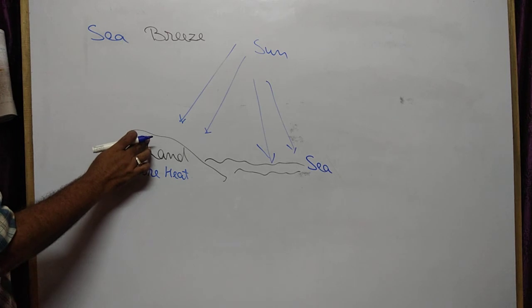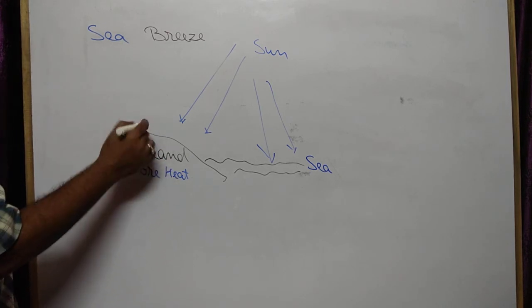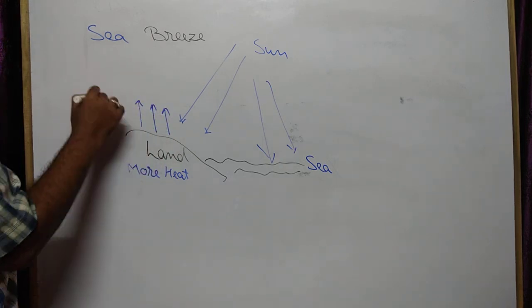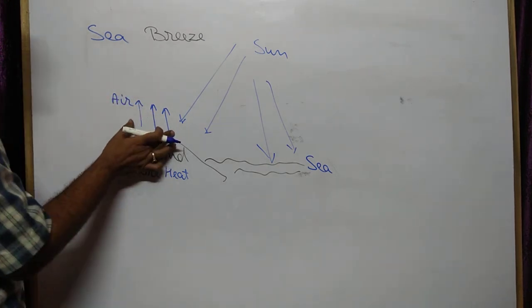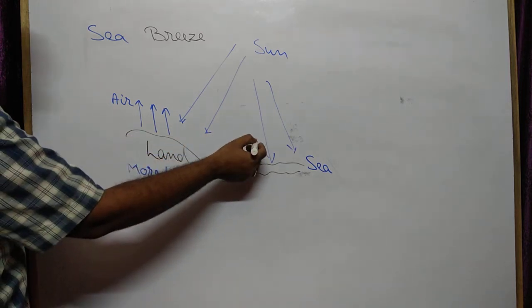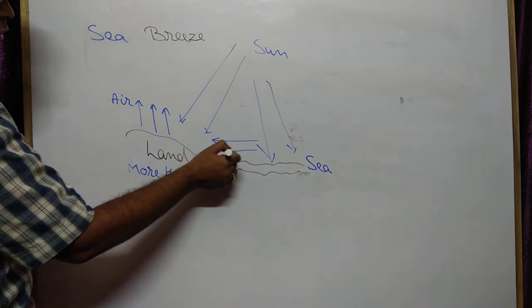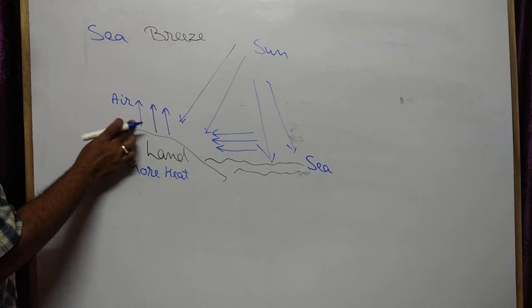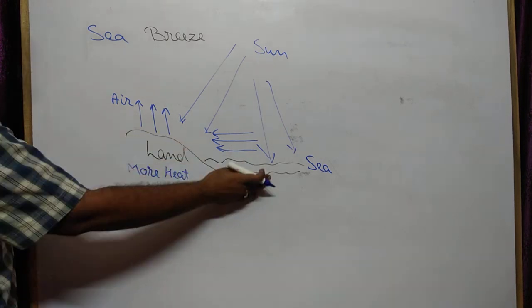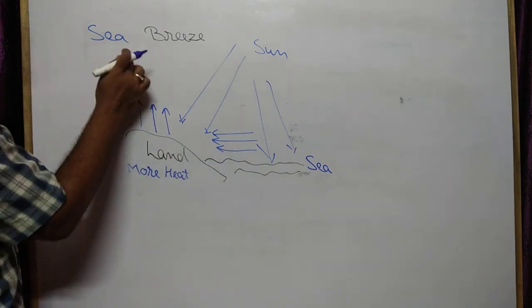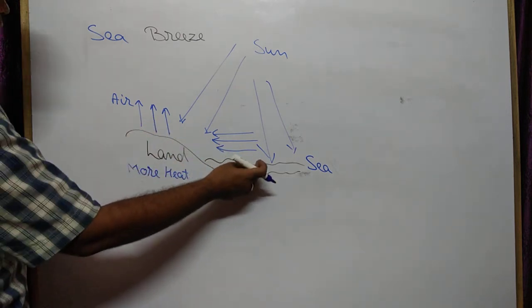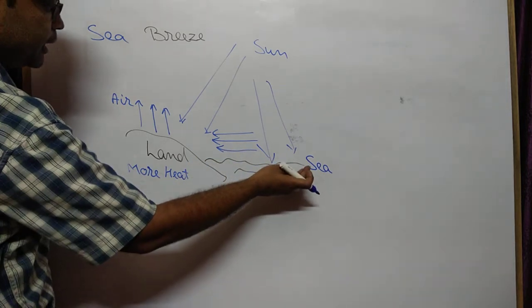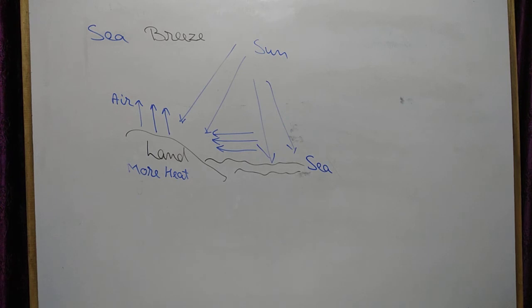Since land absorbs more heat, air above the land expands more because it has more heat energy. It becomes lighter and rises upward, having less density. This makes some space, and much cooler air above the sea surface blows towards the land. This is known as sea breeze, because the air is coming from the sea side.